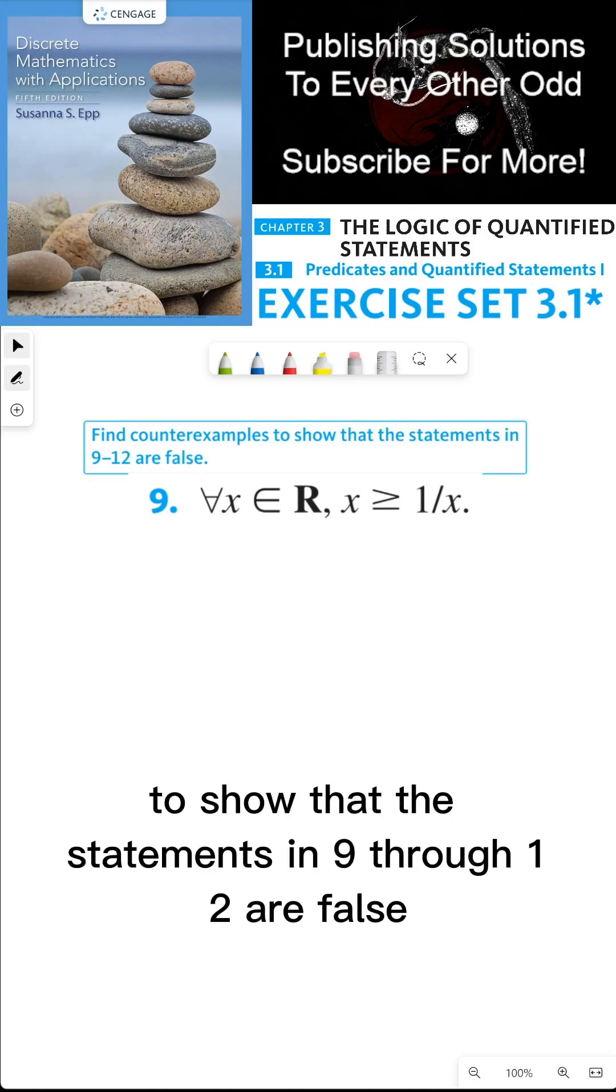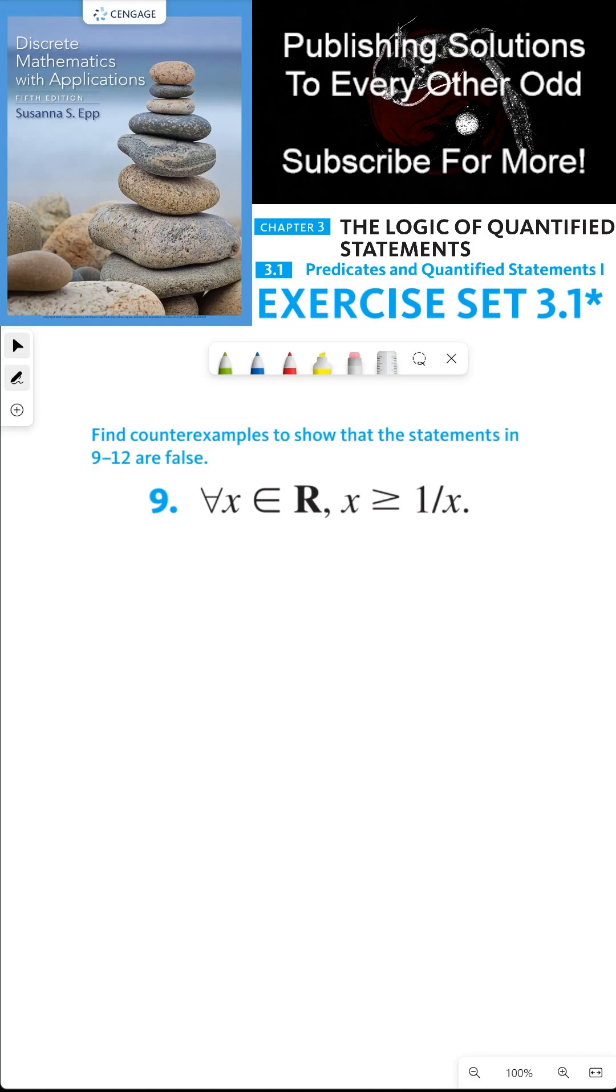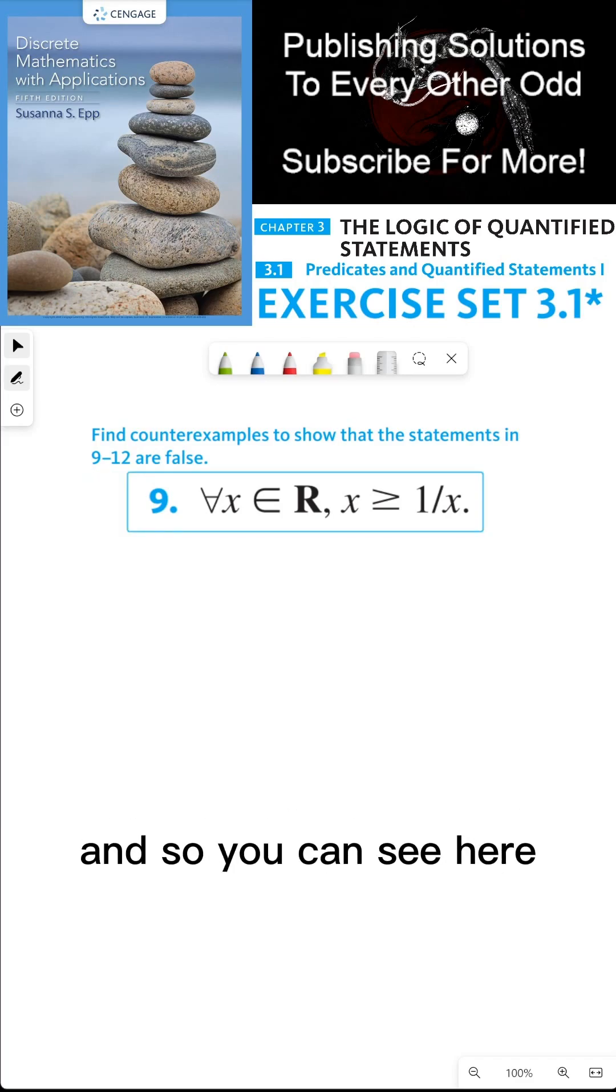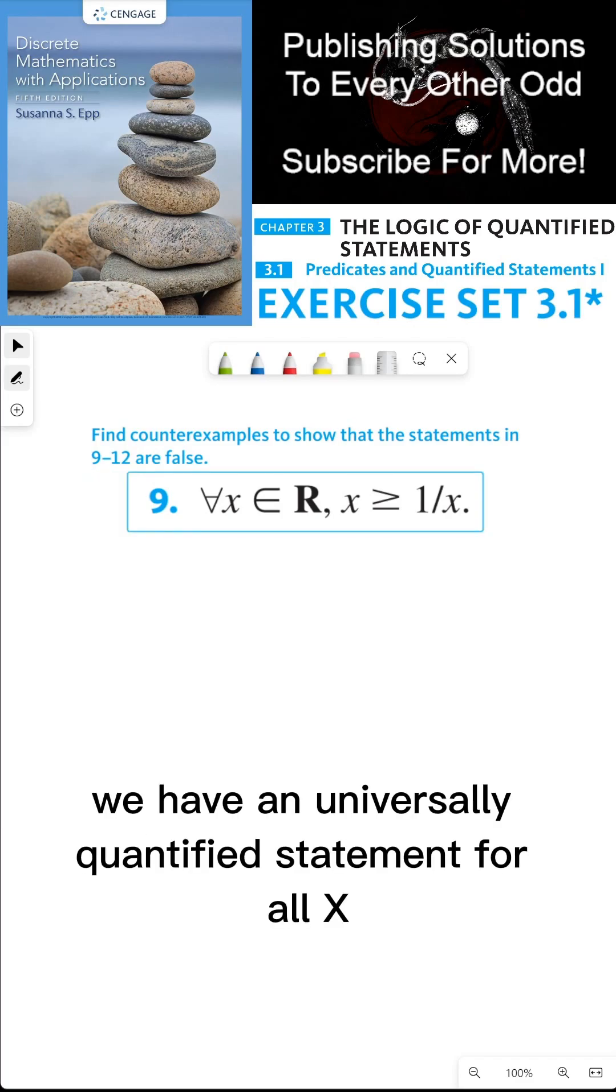Find counterexamples to show that the statements in nine through twelve are false. So you can only find counterexamples to universally quantified statements. And so you can see here, we have a universally quantified statement.